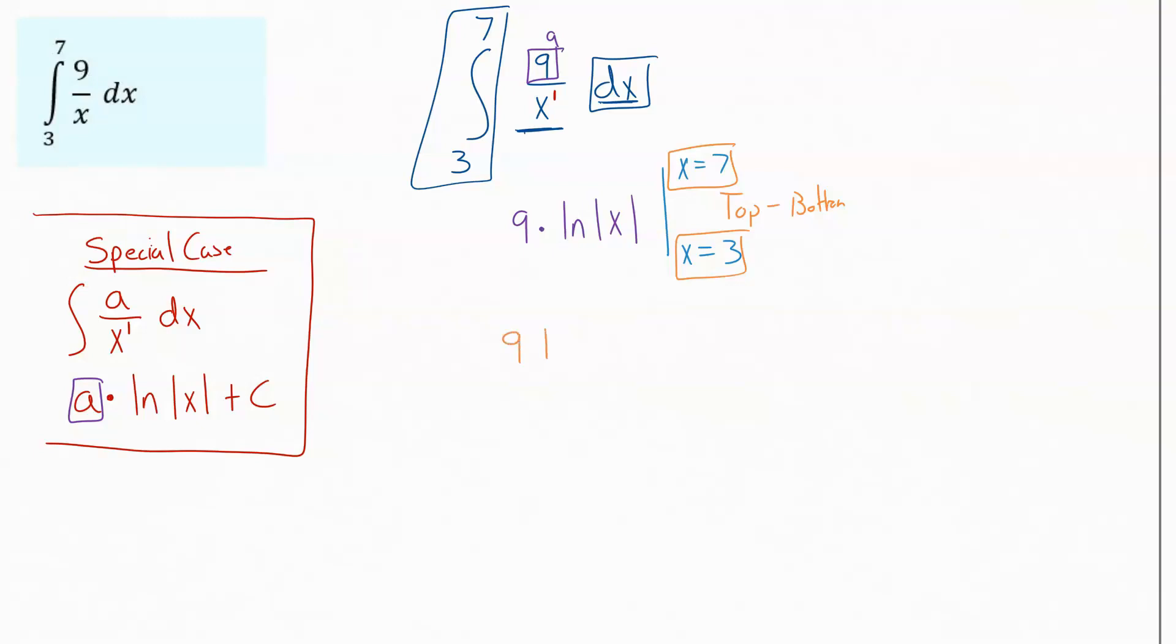We're going to get 9 times the natural log of 7, and then subtract off 9 times the natural log of 3. From there, you're just going to plug that all into your calculator and get a value of something around 7.625. The net area between the curve and the x-axis from 3 to 7 of this equation, our definite integral, tells us is 7.625.